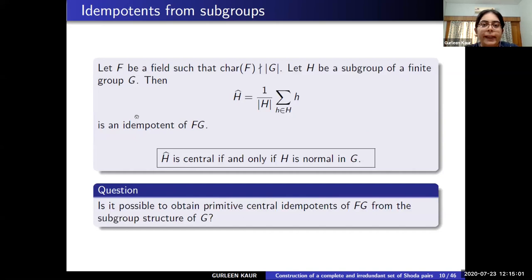A standard way of constructing idempotents in a semisimple group algebra is that if H is a subgroup of G, then H-hat is an idempotent of FG, which is central if and only if H is a normal subgroup of G. So in case H is a normal subgroup of G, we have a central idempotent of FG. This leads one to think: is it possible to obtain the PCIs of FG from the subgroup structure of G?